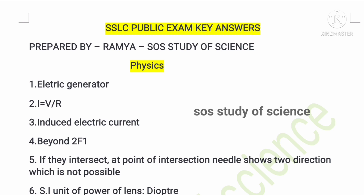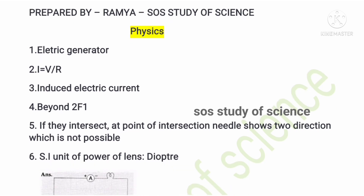Let me start from the Physics part. The first multiple choice question answer is 'electric generator' — the device used to produce electricity. The second question asks the formula showing the relationship between potential difference, electric current, and resistance — the answer is I = V/R. The third multiple choice question is about Fleming's right hand rule — the middle finger indicates induced electric current.